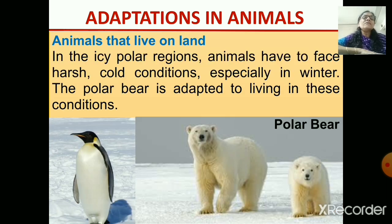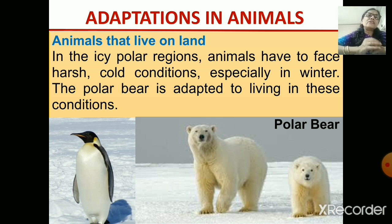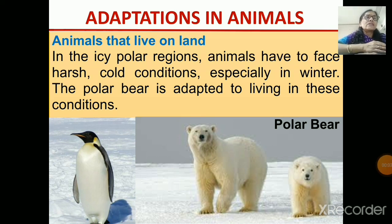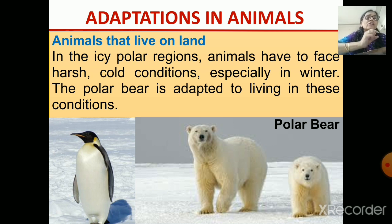Animals living in the polar region — as you know the polar region is very cold — are adapted to live in cold regions. You can see the picture of a polar bear. They have got a thick skin which helps them to keep warm. The polar bear has got a thick layer of fat under its skin, and on the outside it has got a coat of fur.